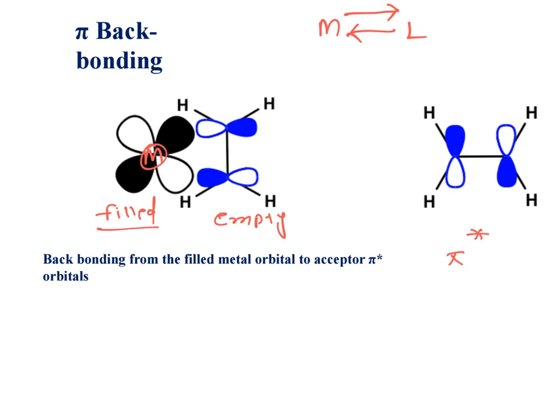And filled orbitals are associated with the metal. Now, metal filled electrons are donated to empty orbital of ligand. As a result, this forms pi bond. And this we call it as pi backbonding. The sigma bond is ligand to metal.